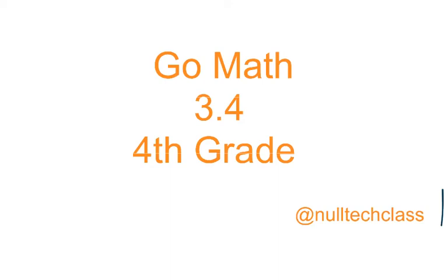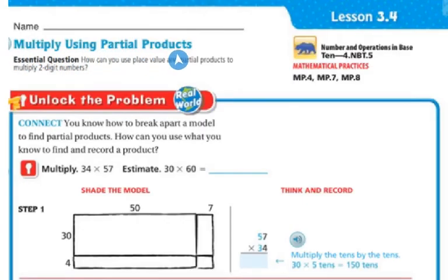Good morning. Today's lesson is 3.4. Today we're going to multiply using partial products. Our essential question: how can you use place value and partial products to multiply two-digit numbers? Let's unlock the problem. You know how to break apart a model and find the partial products, but how can you use what you know to find out and record a product?